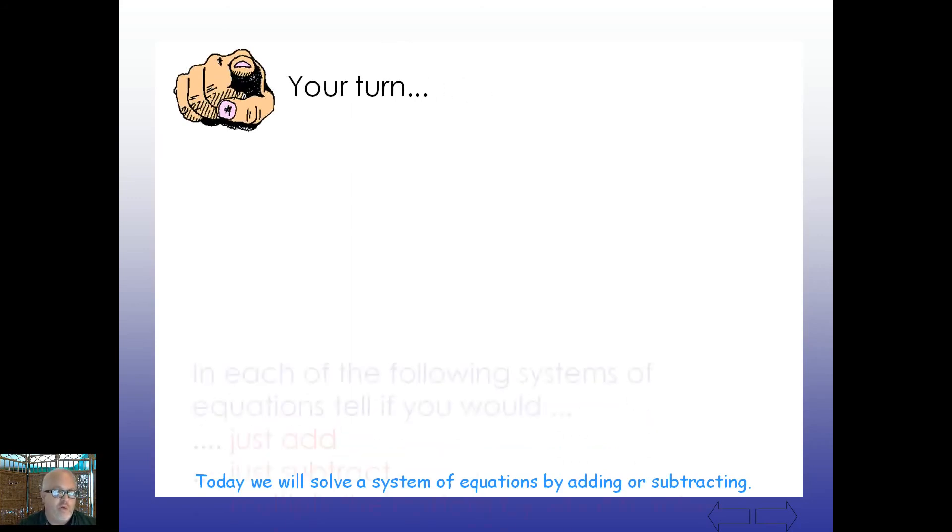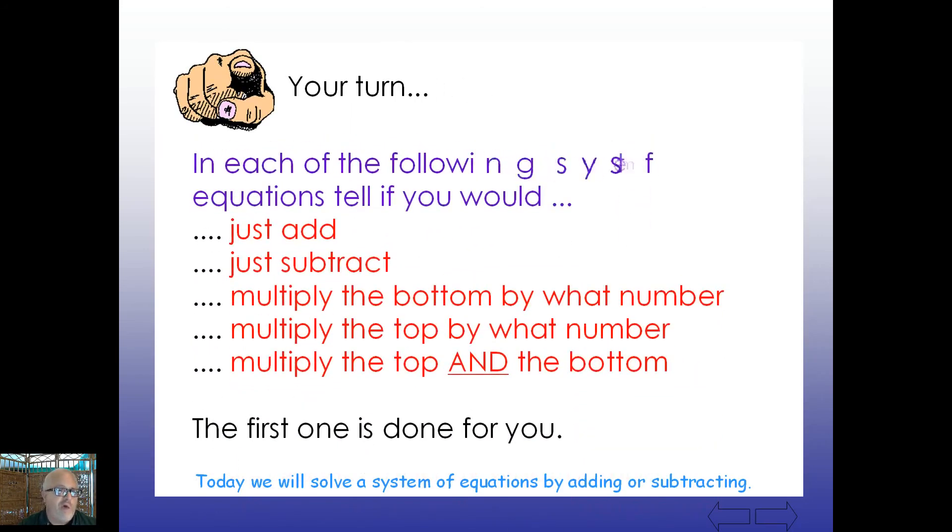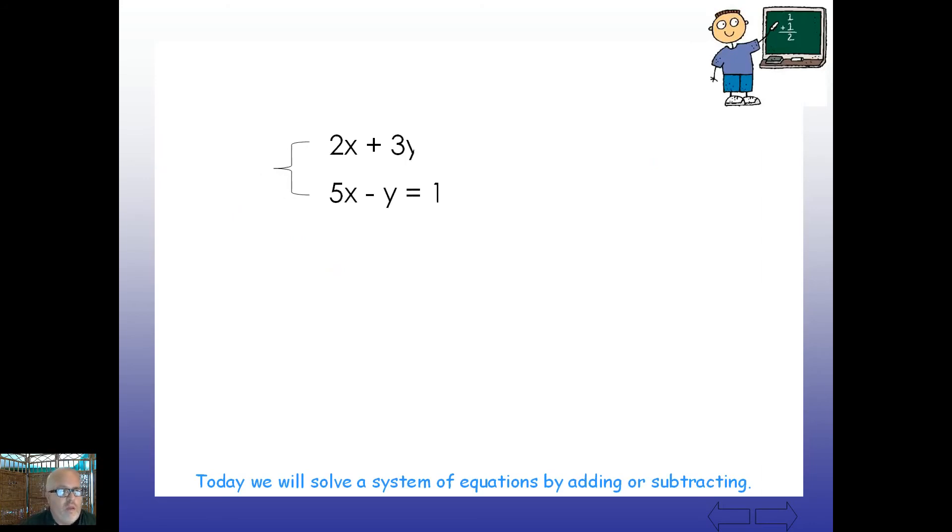All right. So your turn here. In each of the following systems of equations, tell if you would do what. Just kind of play along with me here. I'm just going to ask you, would you add straight down? Would you subtract? Would you multiply the bottom by what number? Multiply the top by what number? Or multiply both? So here's the first one done for you. So here I've got a system. And in this case, all I'm going to do is just multiply the bottom equation by 3. Because this would allow these two coefficients to cancel. And then we can just go about our work.